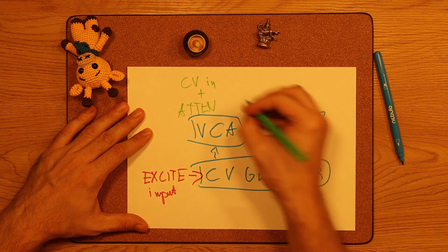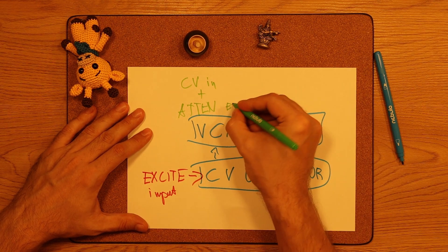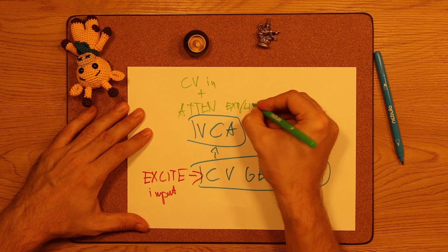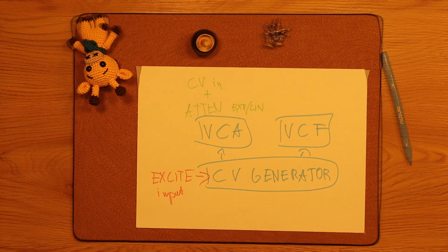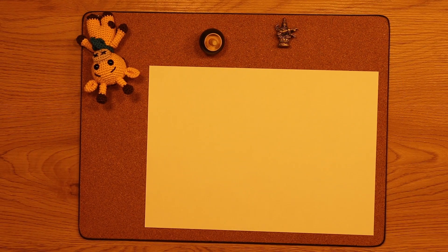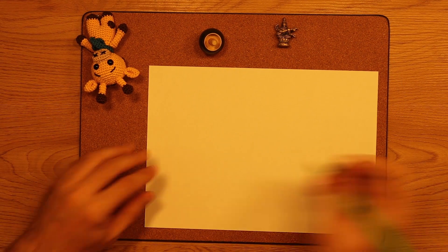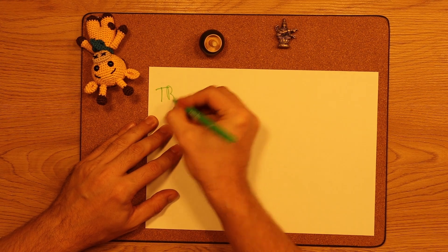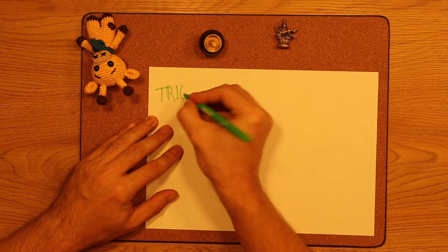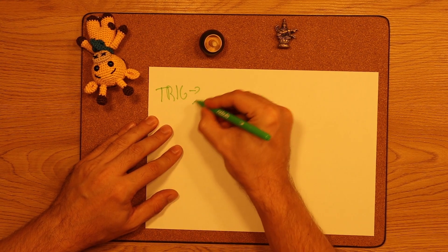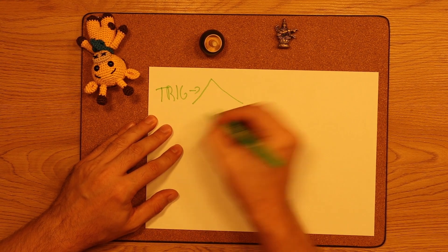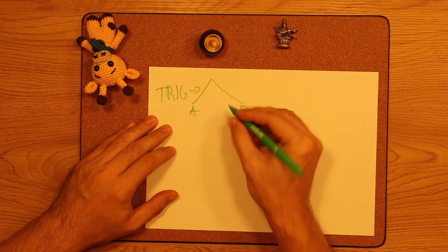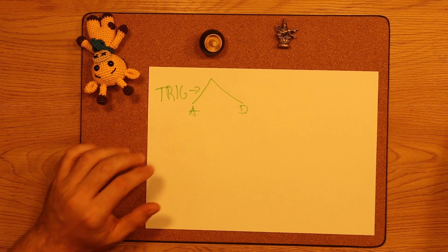You can change the VCA response with a knob, from exponential to linear. There are four basic functions on the module, which you can switch between with a button. The first is an envelope generator, which is tuned to produce the natural attack decay curve of acoustic instruments.